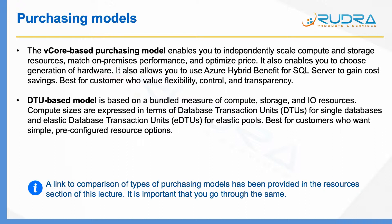The second model is the DTU-based model. Here, you can't independently choose compute and storage. It's a bundled measure of compute, storage, and IO resources. Compute sizes are measured in terms of database transaction units. And if you go for elastic pools, it is measured as elastic database transaction units. Each transaction unit represents an amount of compute, storage, and IO resources.